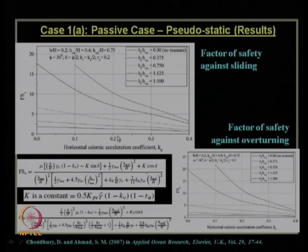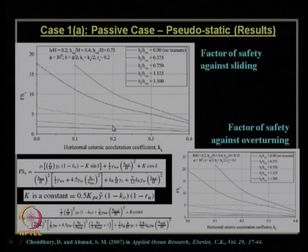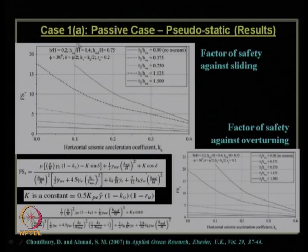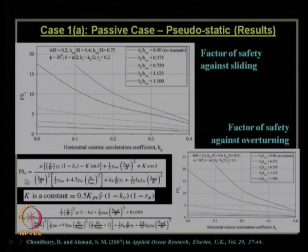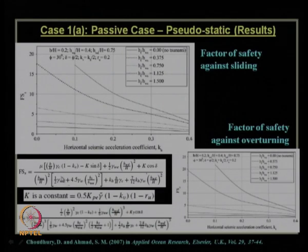For example, at k_h value of 0.2g with a tsunami wave height of 1.125, you go to the corresponding line and read off the factor of safety against sliding for the chosen input values. If it does not satisfy the stability criterion of 1.15 minimum factor of safety against sliding under earthquake conditions, the wall section must be redesigned to withstand both seismic acceleration and the tsunami wave height at that particular region.